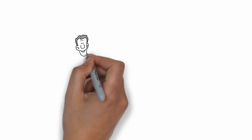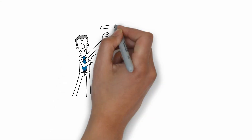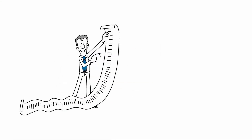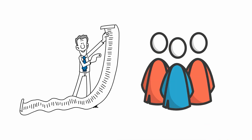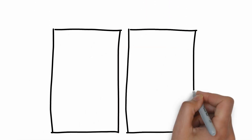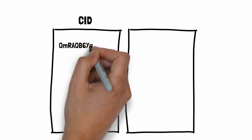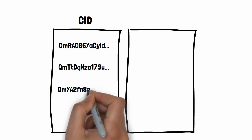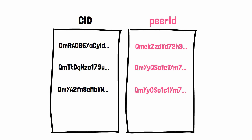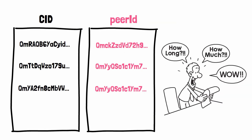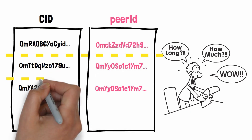Pay attention. The DHT is a catalog of all the data available on IPFS — it tells you who knows what. It's a dictionary with two columns: the left column contains CIDs, the identifiers for the data, and the right column contains information about other network participants. But there is a problem: the DHT is huge. It cannot fit on a single computer, so we need to split it across the network.